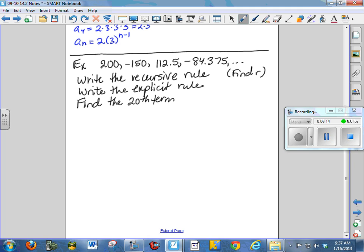So for number 1, find r. This is where I'm going to say r is negative 150 over 200, which should also be the same as 112.5 divided by negative 150, which is the same as negative 87.375 over 112.5. And if you do that on the calculator, you will find that r is equal to negative 0.75.